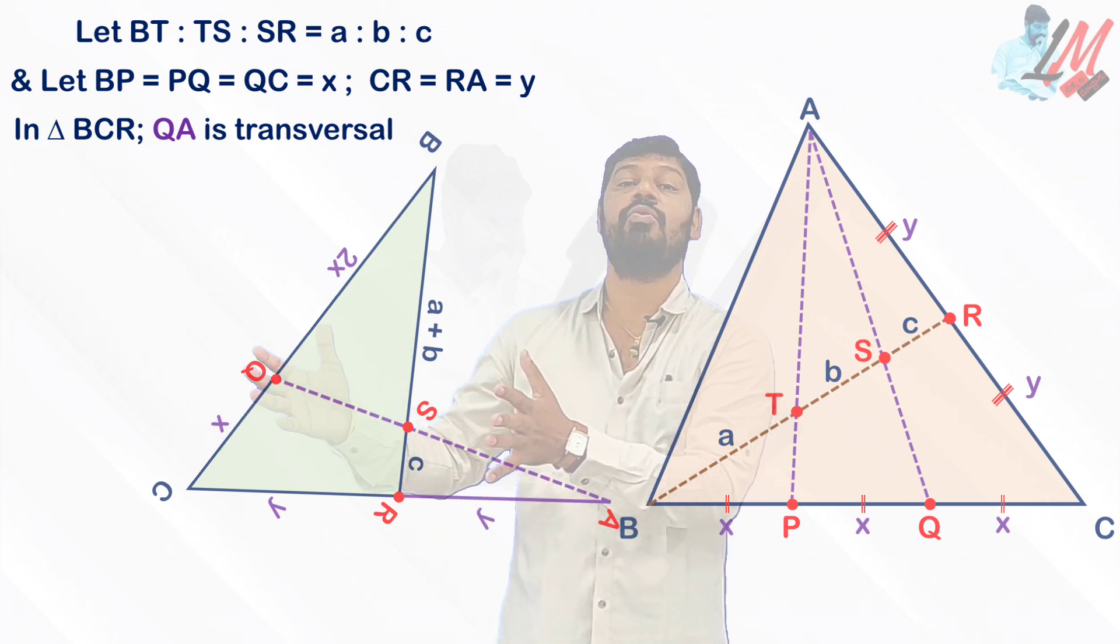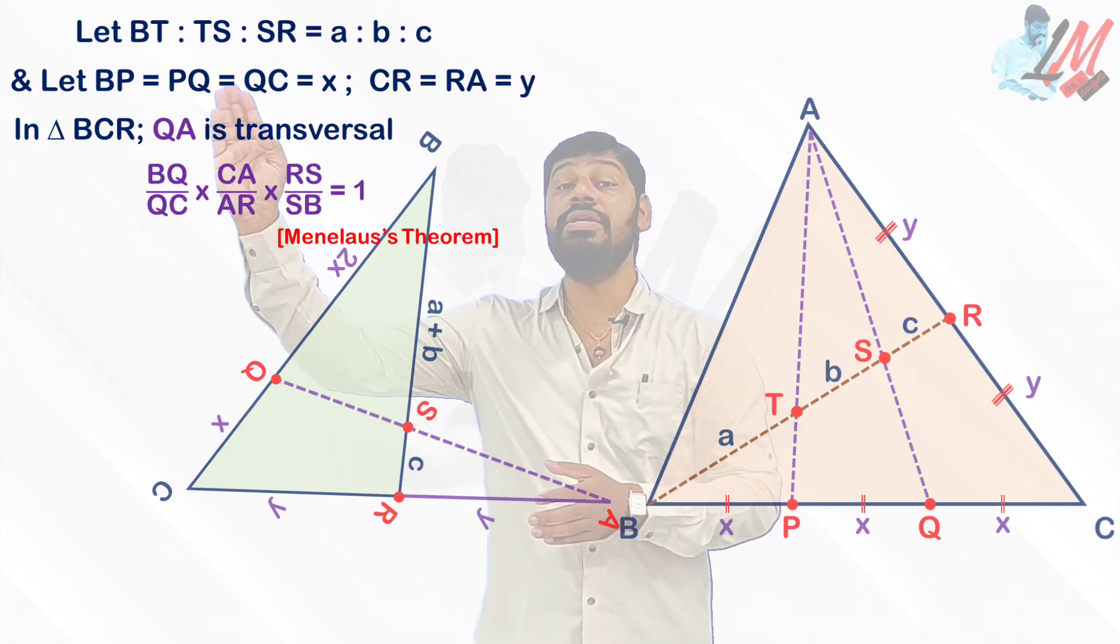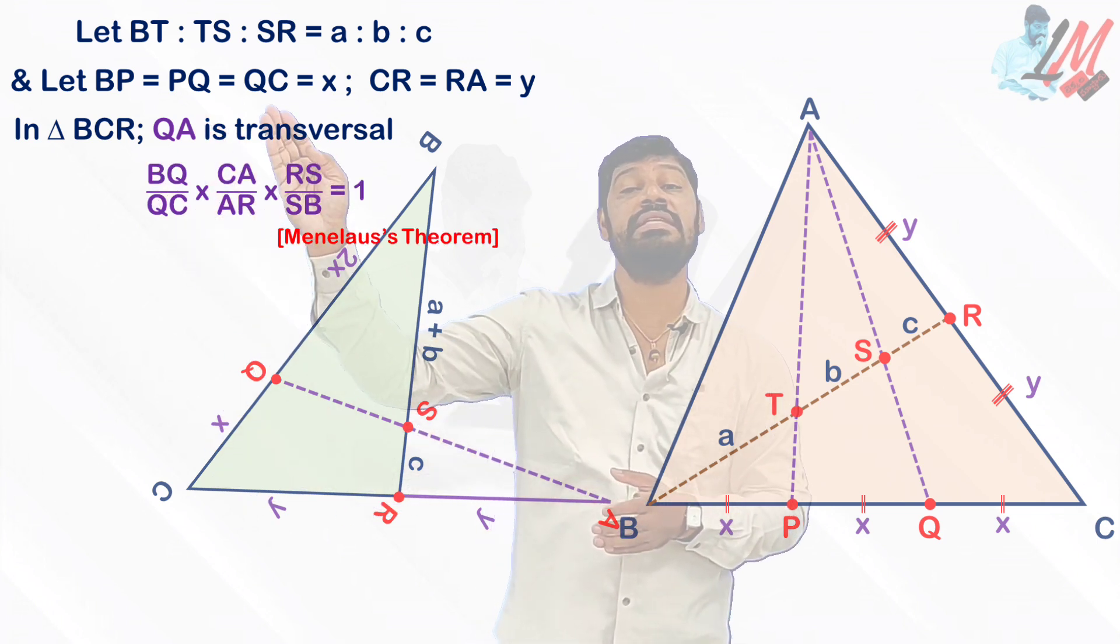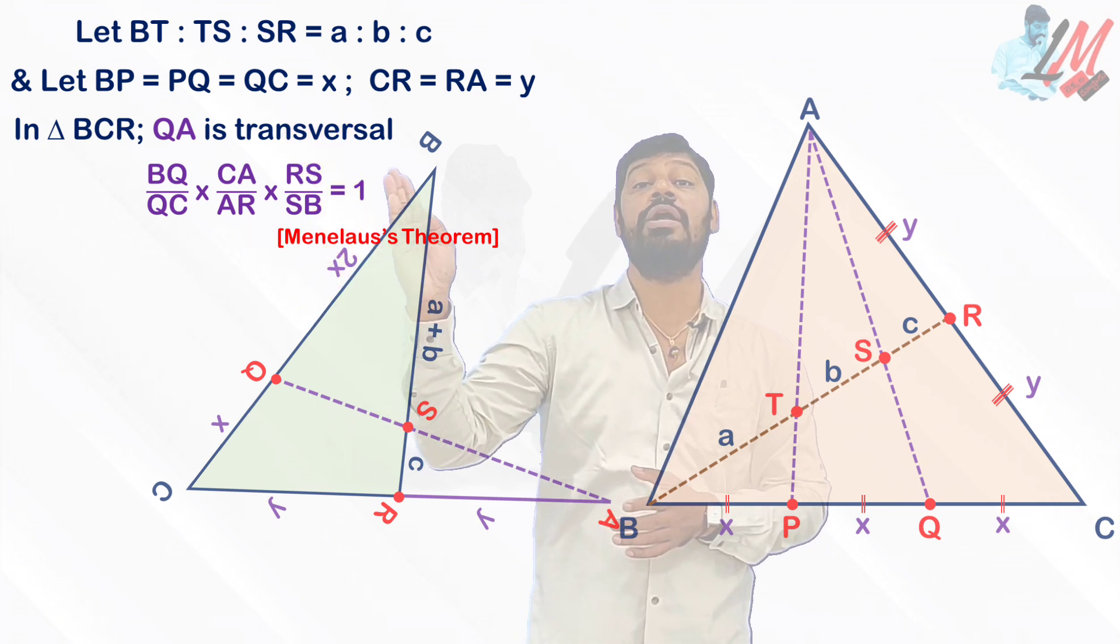So clearly you can see the triangle BRC and QA as a transversal. So simply you can apply Menelaus's theorem in this particular situation. So what you are going to get if you apply Menelaus's theorem here.